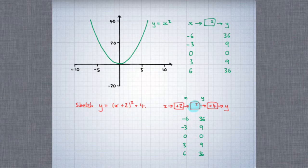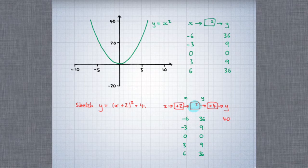On the new graph — the one that we want to draw — both the x-coordinates and the y-coordinates need to change. That's because the x-coordinate is no longer the input to the square function. The y-coordinates are all 4 more than they used to be. So where before we had 36, here we'll have 40. Where before we had 9, here we'll have 13, and so on.